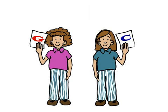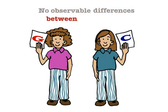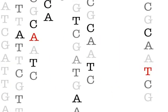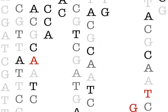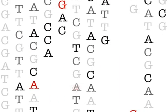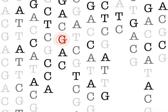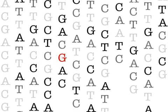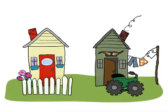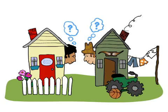Most SNPs, however, seem to lead to no observable differences between people at all. Since variants are passed down from one generation to the next, the number of differences between your DNA and your neighbor's can tell you how closely you are related to each other.